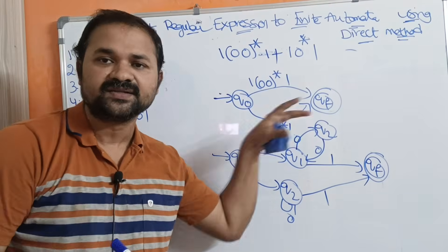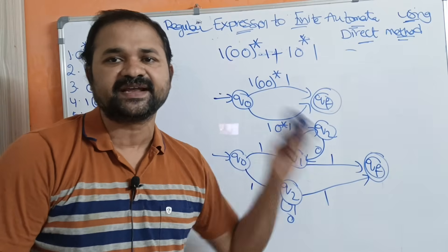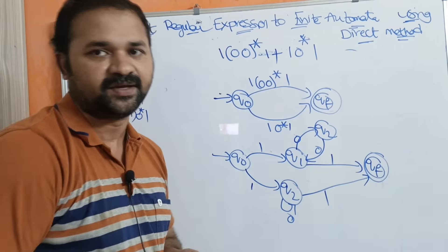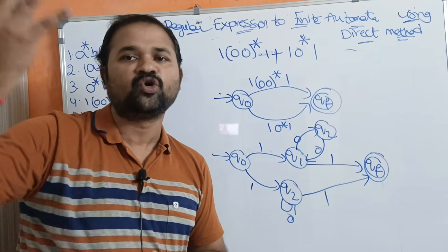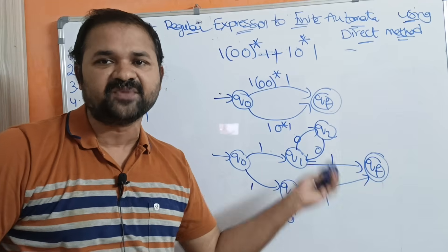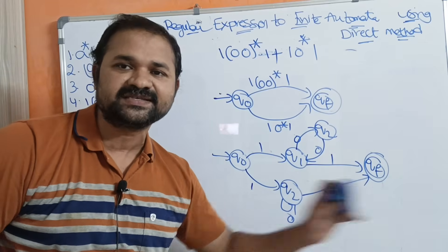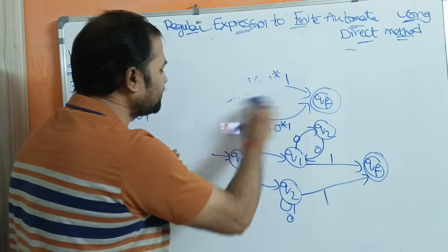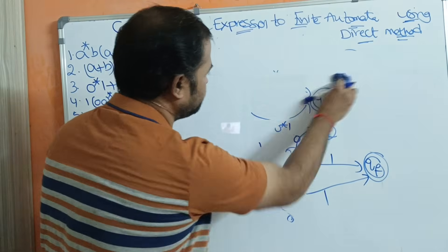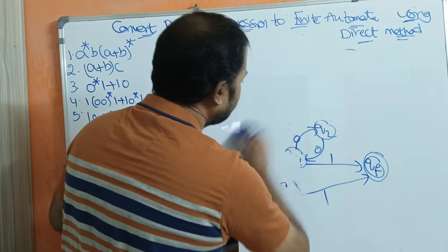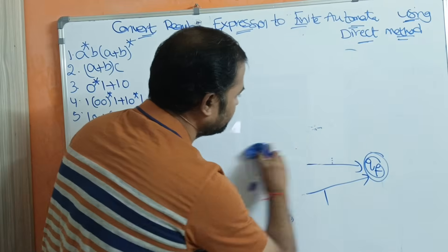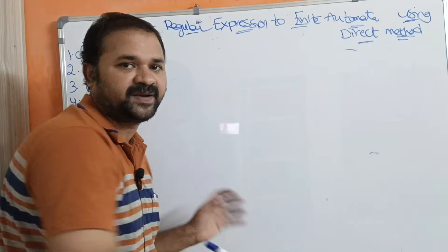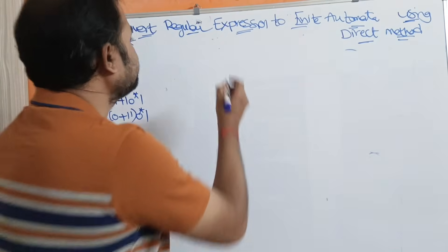This finite automata is an NFA. We can convert this NFA into a DFA using the NFA-to-DFA conversion algorithm. If the question is for five marks, the NFA is enough; if it is for ten marks, it is better to convert to a DFA as well. A link to the relevant video will be shared in the description.